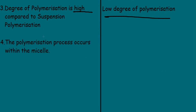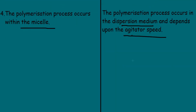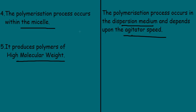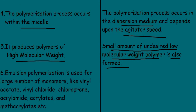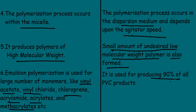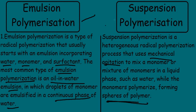For emulsion polymerization, the polymerization process occurs within the micelle and produces polymers of high molecular weight. For suspension polymerization, the process occurs in the dispersion medium and depends on agitator speed, but a small amount of undesired low molecular weight polymer is also formed. Emulsion polymerization is used for vinyl acetate, vinyl chloride, chloroprene, acrylamide, acrylates, and methacrylates. Suspension polymerization is used for producing 90% of all PVC products.